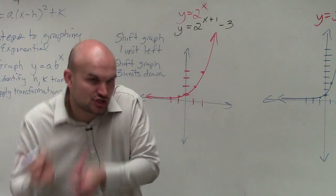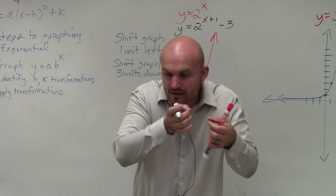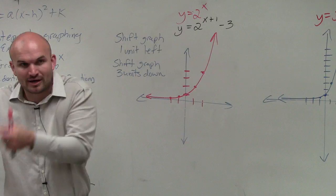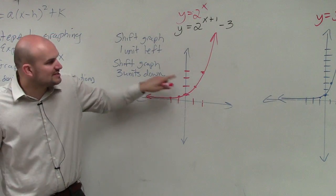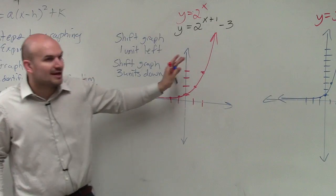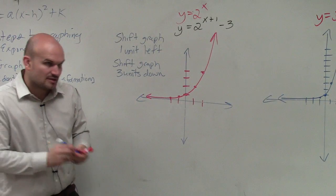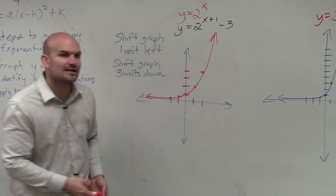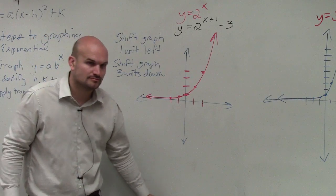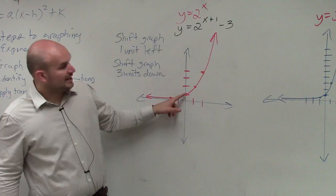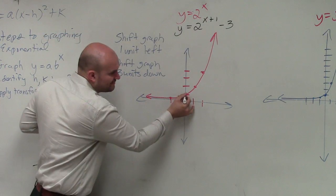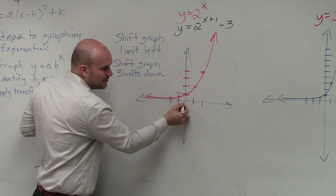So we're taking our graph, shifting it to the left one and down three units. Now, all we simply need to do is take this red graph and apply those transformations. So the best point to apply the transformation to is you're going to take this point, shift it over one, and then down three units.